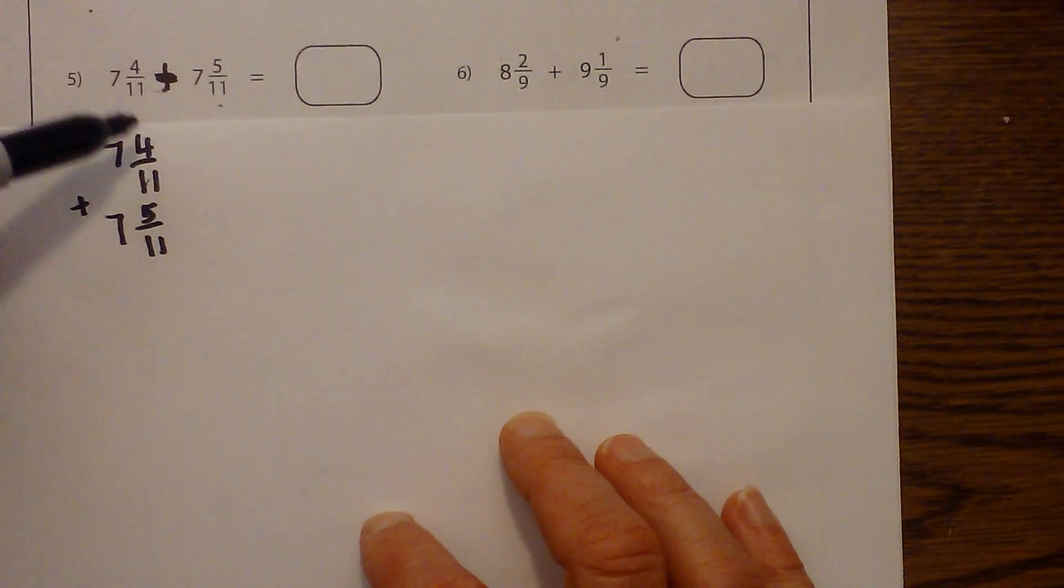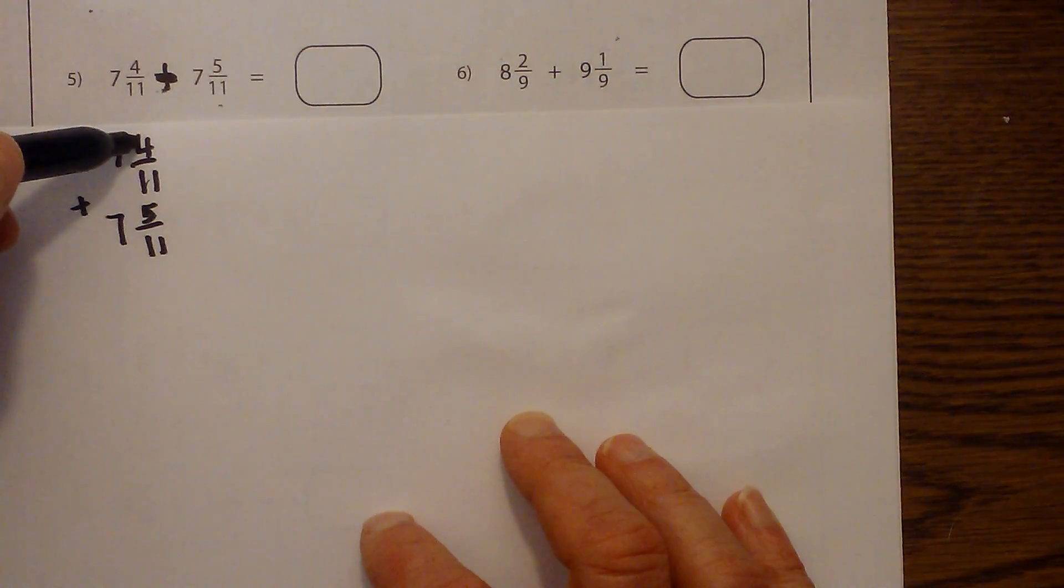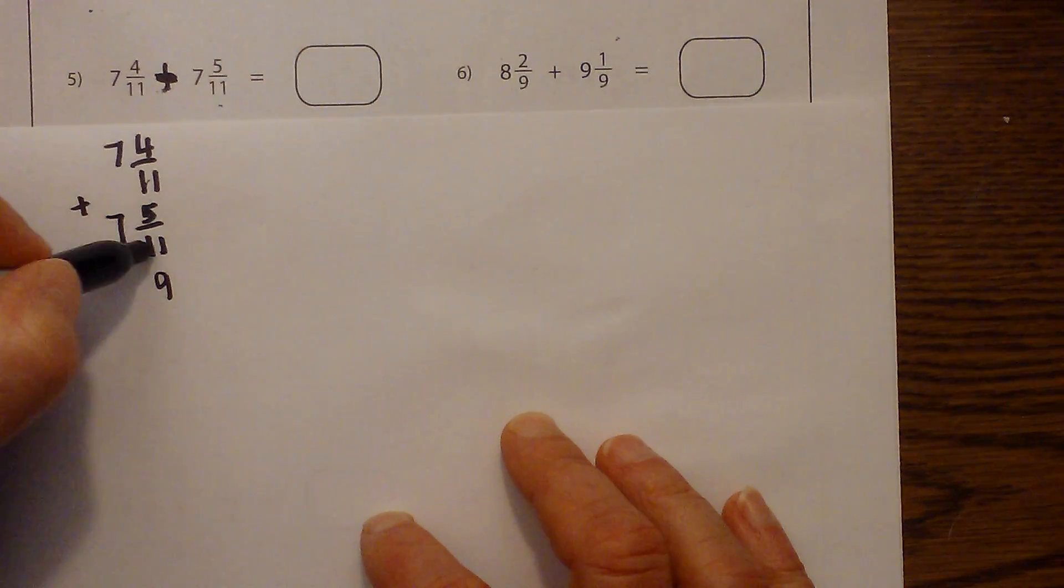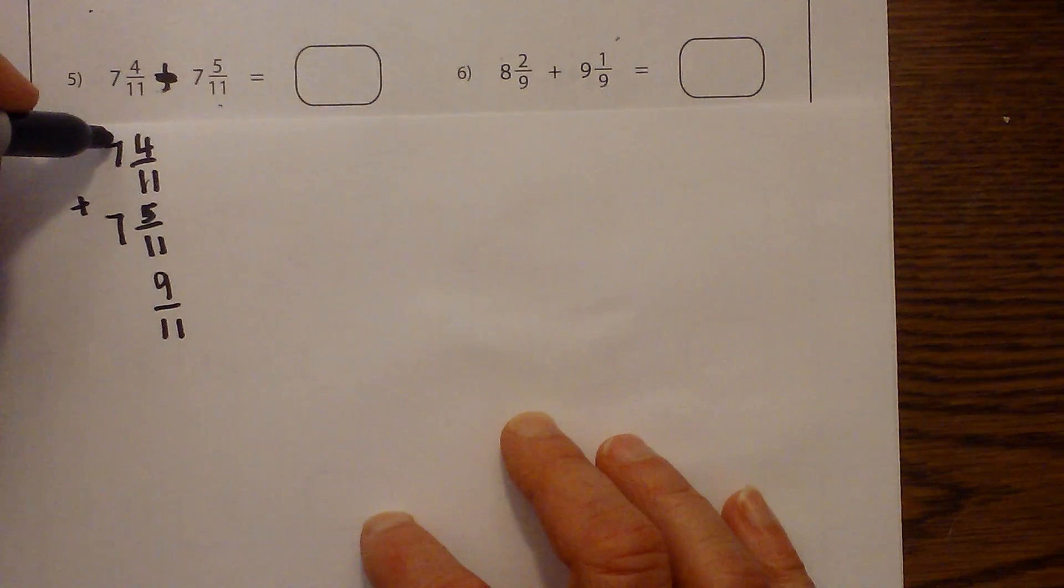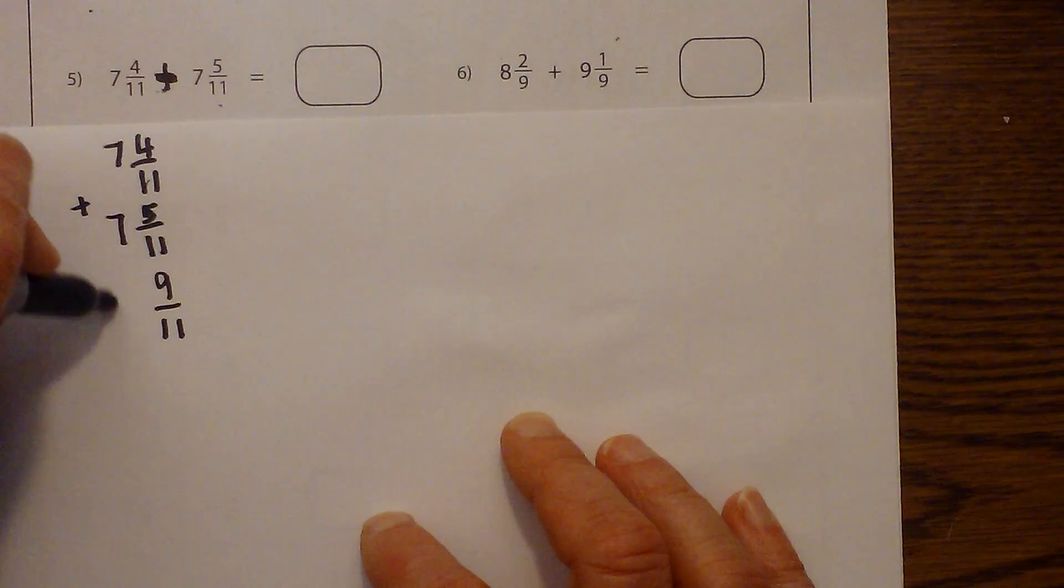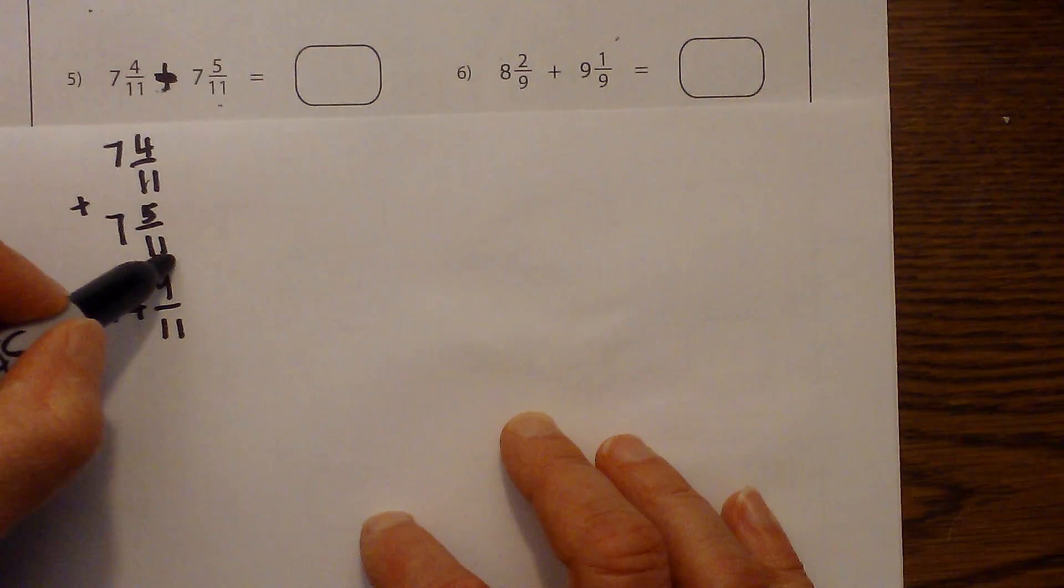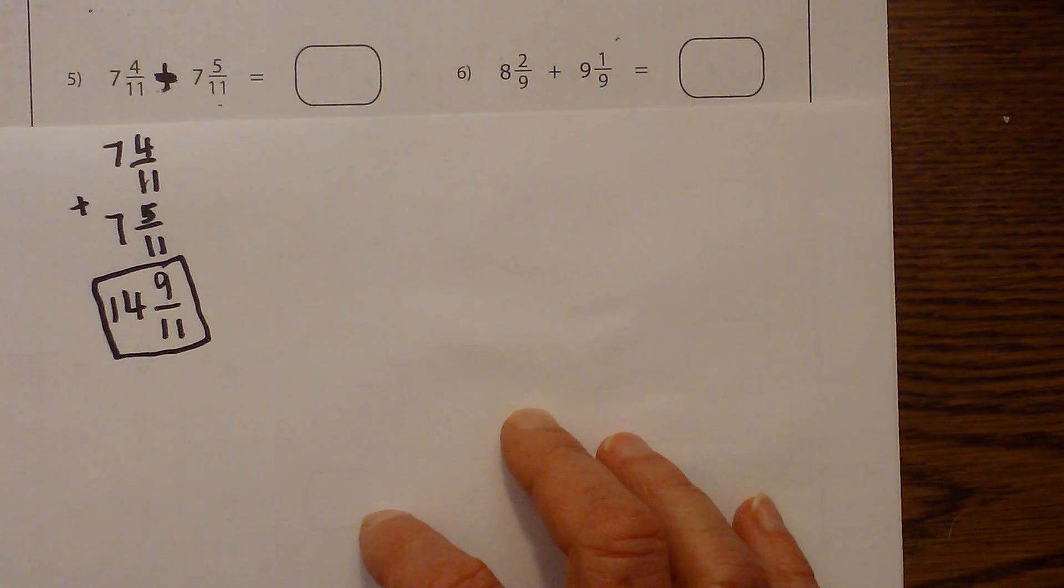So what you should do is always start with the fraction first. So I have 4 plus 5 is 9, and then the denominator remains the same, 9 elevenths. And then 7 plus 7 is 14. And I cannot simplify any further. So that is 14 and 9 elevenths.